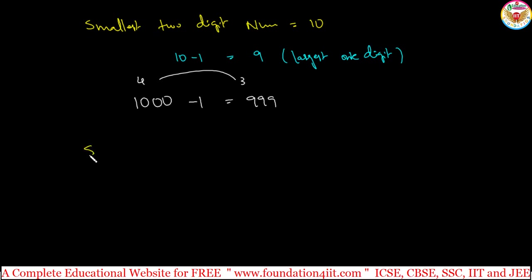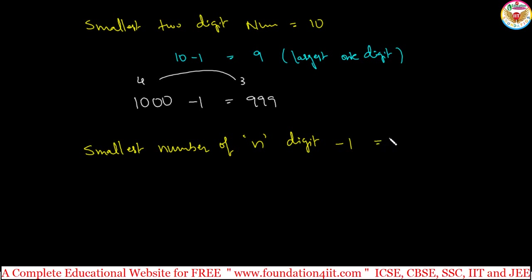We can also make this a pattern: the smallest number of n digits minus 1 equals the largest number of (n−1) digits. For example, 4-digit becomes 3-digit. So smallest n-digit number minus 1 is the largest (n−1)-digit number.